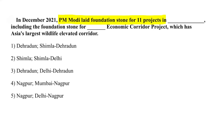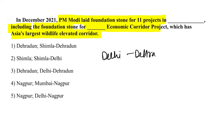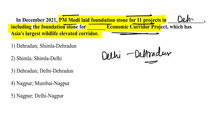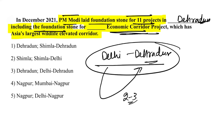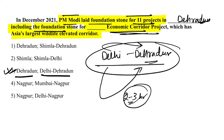PM Modi laid the foundation stones for 11 projects including the Delhi-Dehradun Economic Corridor. This corridor is also Asia's largest wildlife elevated corridor. Travel time from Delhi to Dehradun will reduce to approximately two to three hours.